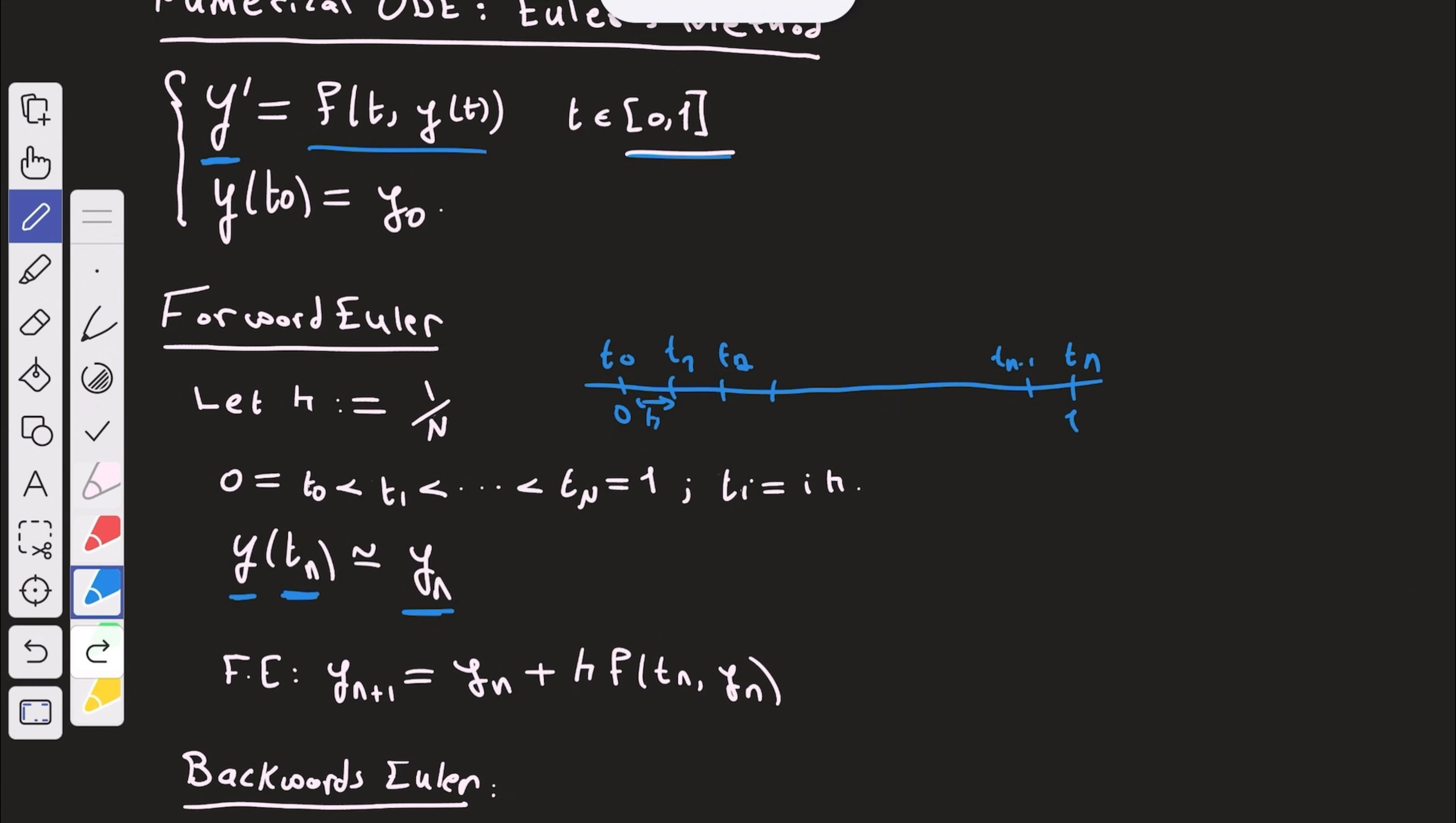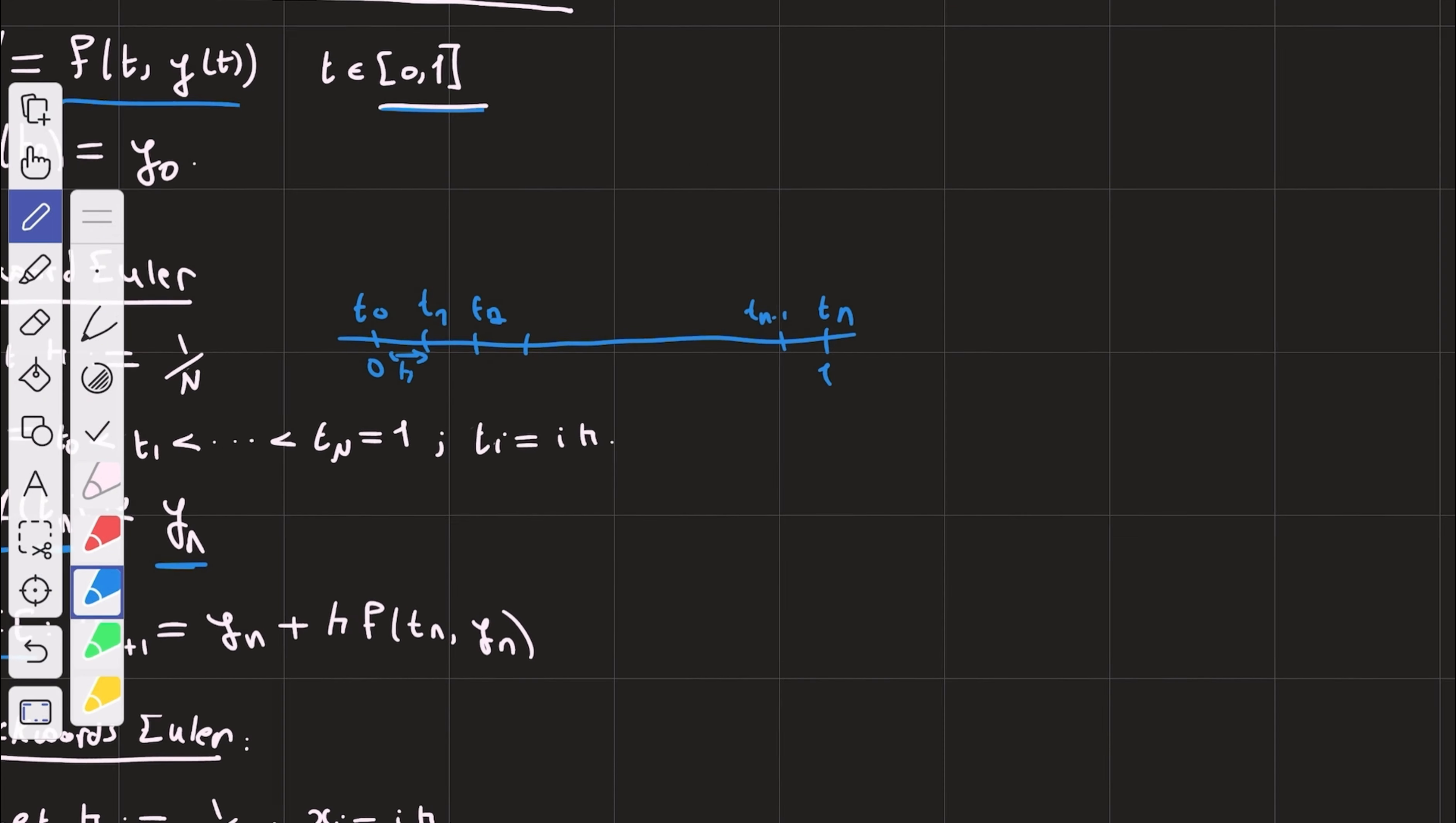So forward Euler's method is given by yn plus 1 equals yn plus h f of tn, yn. And now we're going to derive forward Euler's method. So let's see what is going on here.